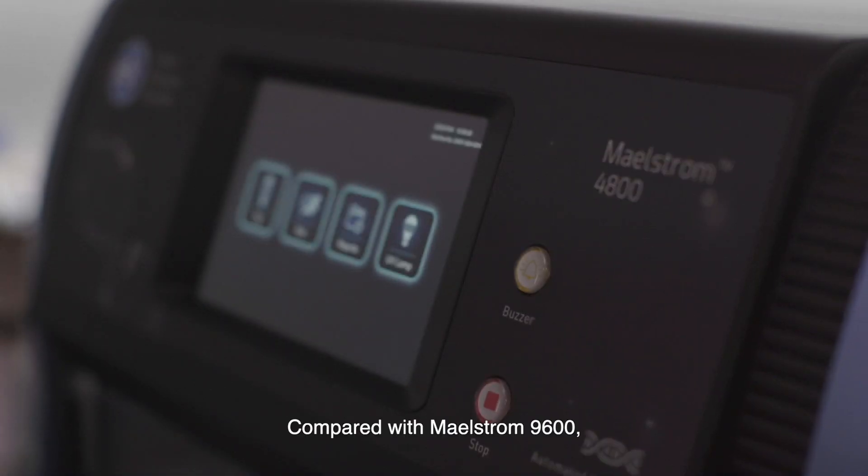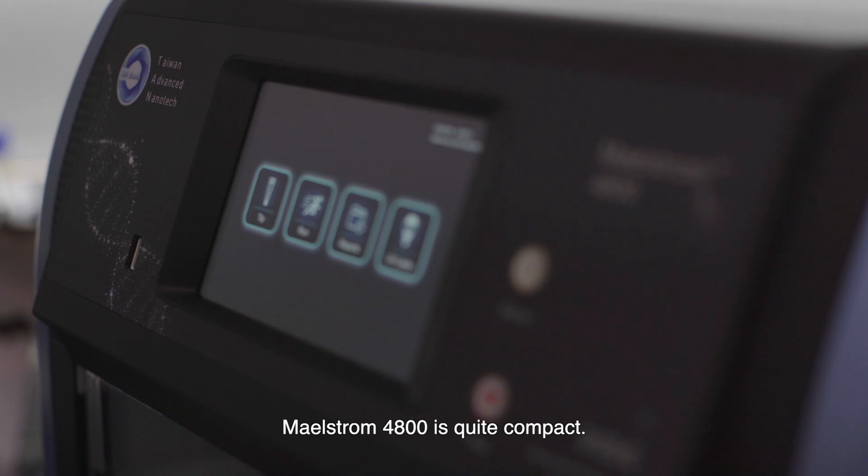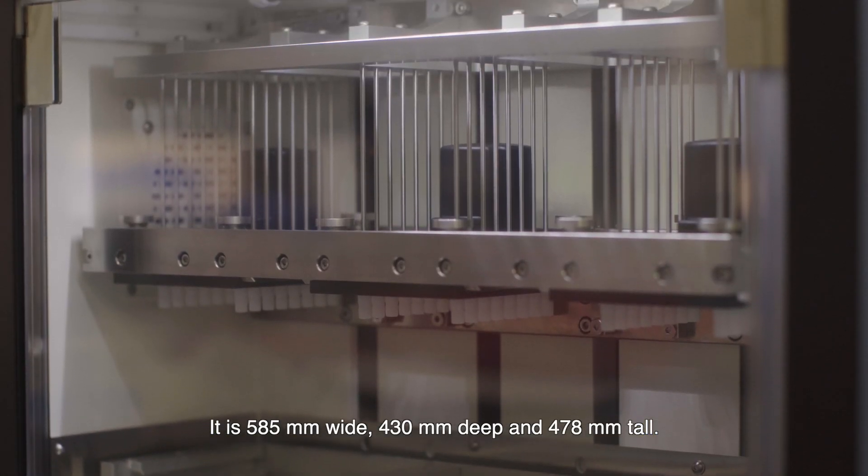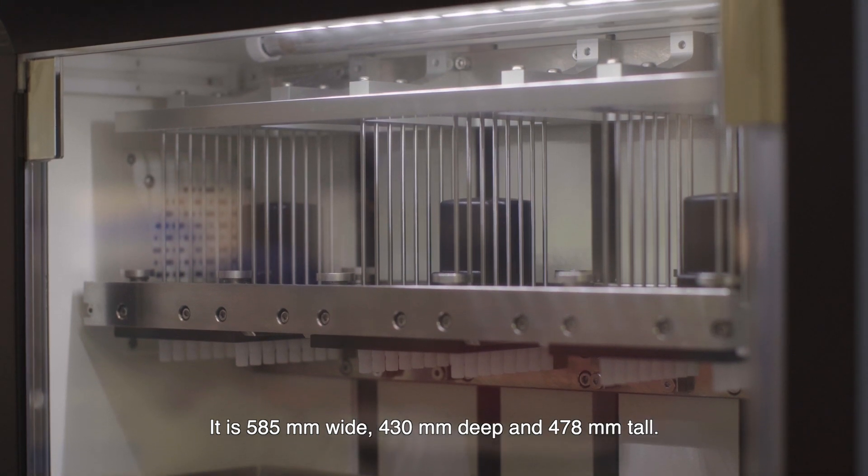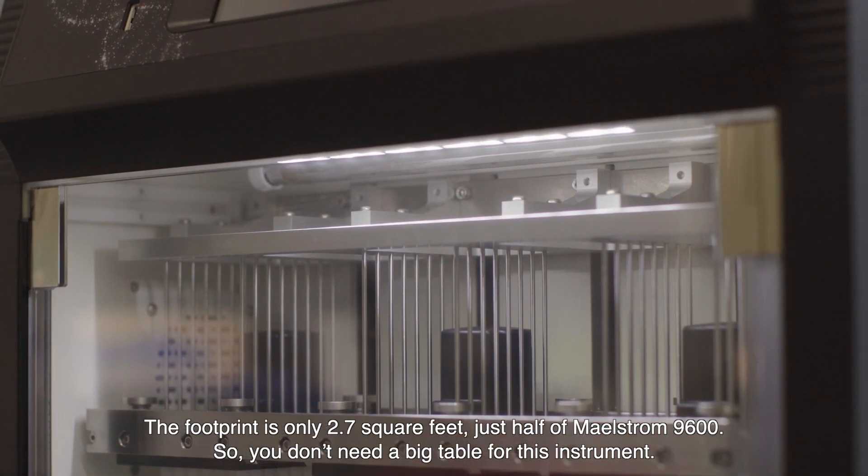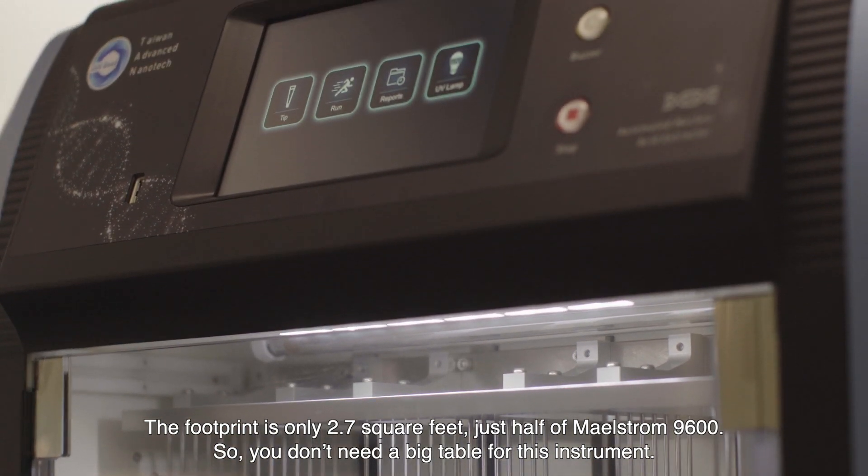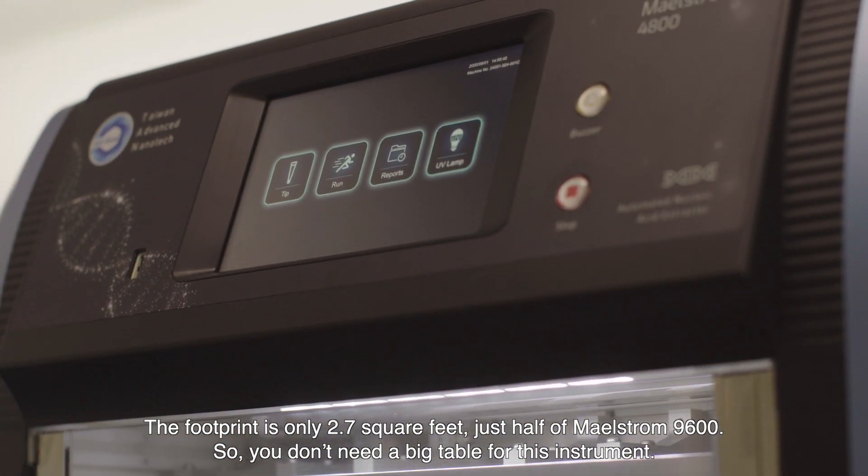Compared with Maelstrom 9600, Maelstrom 4800 is quite compact. It is 585 millimeters wide, 430 millimeters deep and 478 millimeters tall. The footprint is only 2.7 square feet, just half of the Maelstrom 9600, so you don't need a big table for this instrument.